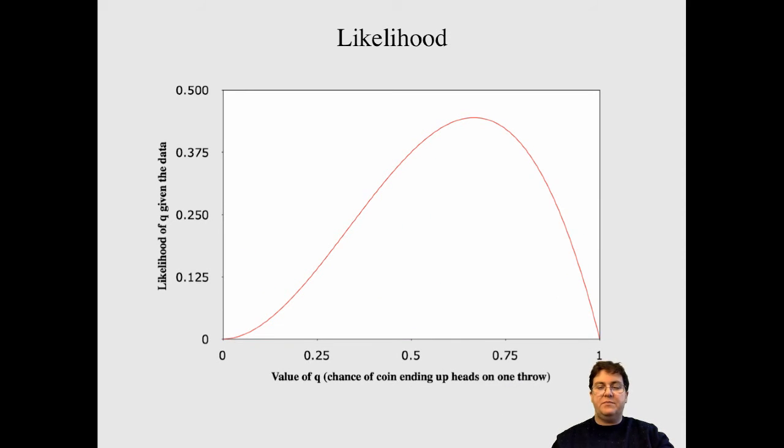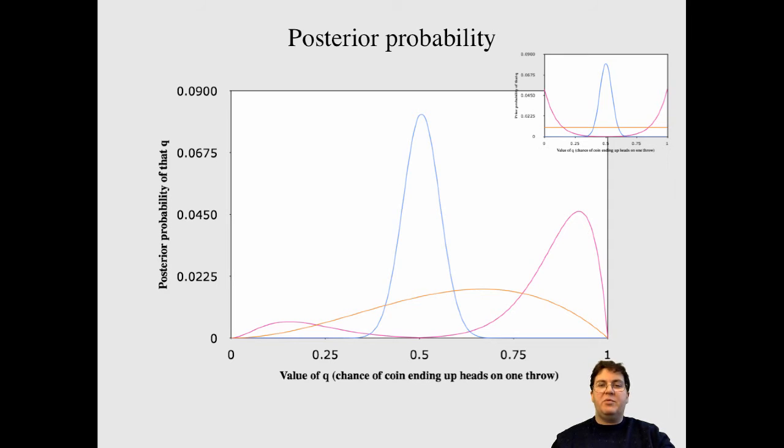So, my likelihood function again. And the posterior is the likelihood times the prior, divided by the sum of those for all of them. And so, here we see how each of those priors relates to the posterior. So, for my orange flat prior, the final curve is like my likelihood curve. And the maximum there, is about two-thirds, like it was with likelihood alone.